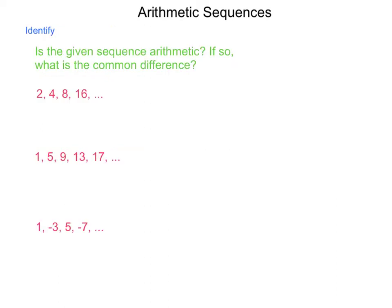Some arithmetic sequences. Is each of these an arithmetic sequence? If so, what is that common difference? So in order to find this out, we simply look to see how do we move from one term to the next. To move from 2 to 4, I add 2. From 4 to 8, I add 4. From 8 to 16, I add 8. So is this an arithmetic sequence? The answer is no, because there's not a set difference from one term to the next.